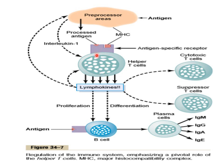The helper T cells are activated by the APCs. When activated, they secrete different lymphokines that cause the growth of B cells, affecting humoral immunity by converting them into plasma cells and secreting antibodies to combat extracellular organisms. They also increase the production of cytotoxic T cells, affecting cell mediated immunity and causing infected cells to be killed. They also cause the increase of suppressor T cells, which regulate the whole cell mediated immunity.